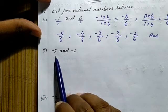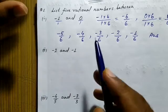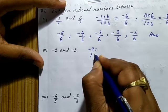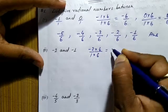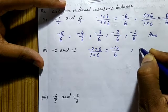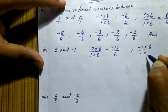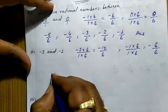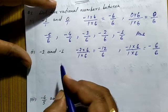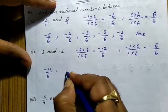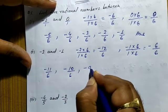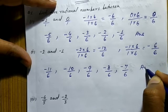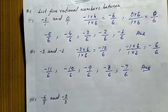Now second part: list five rational numbers between minus two and minus one. Again you can make the denominator six. Minus two upon one into six becomes minus twelve upon six, and minus one upon one into six becomes minus six upon six. So five rational numbers between minus two and minus one are: minus eleven upon six, minus ten upon six, minus nine upon six, minus eight upon six, and minus seven upon six.